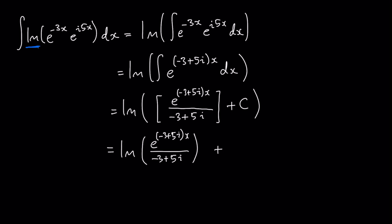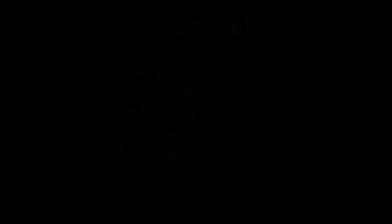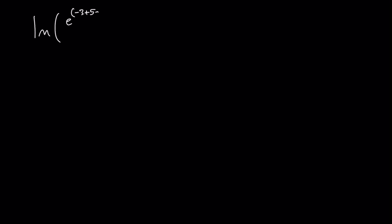And plus some constant on the outside. This constant could, in principle, be complex or real, so I'm just going to pull out the imaginary component of that complex constant. We should recall that the integral we're aiming to evaluate here is a completely real integral, so the answer we get at the end of the day ought to be completely real. So I have the imaginary component of e to the negative 3 plus 5i times x over negative 3 plus 5i, and this constant c.